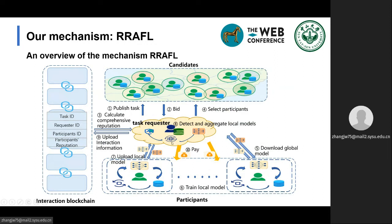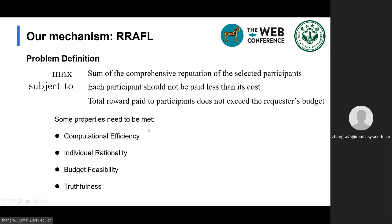Now we formalize the problem. We maximize the total comprehensive reputation of the selected participants on the condition that each participant should not be paid less than its cost and the total reward paid to the participants does not exceed the budget of the requester. Besides, the mechanism needs to satisfy computational efficiency, individual rationality, budget feasibility, and truthfulness.